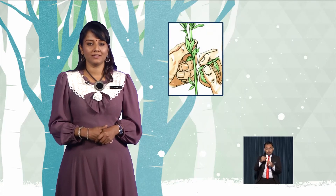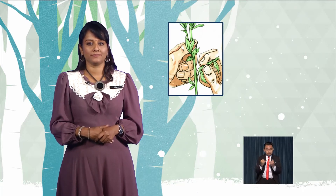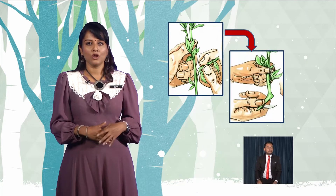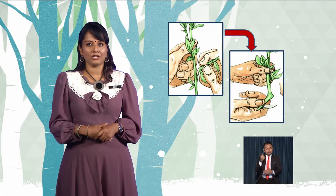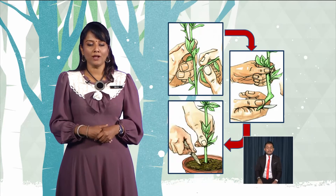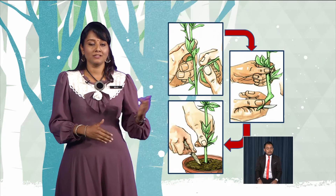Let's learn the steps in stem cutting. The first step is to choose the stem cutting which is best suited for developing into a new plant. The length of the cutting should be around 10 to 15 centimeters long. Then prepare the soil for planting the stem cutting.